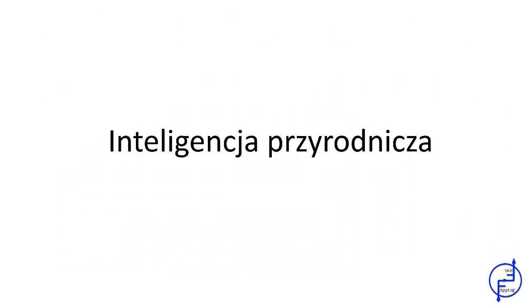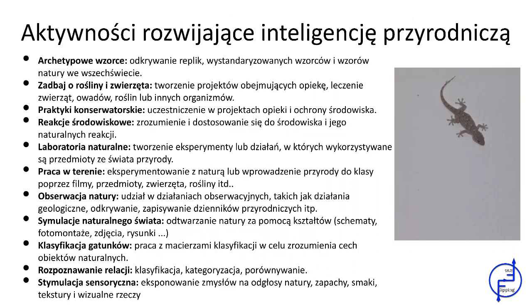Zastosowanie inteligencji przyrodniczej w klasie. Inteligencja przyrodnicza była jedną z ostatnich, które Gardner włączył do swojej teorii, ale nie czyni jej nieważną. Aby wspomóc rozwój tej inteligencji, możemy korzystać z ćwiczeń polegających na klasyfikowaniu obiektów, kategoryzowaniu, porównywaniu wszystkiego co dotyczy środowiska, wyjaśnianiu zjawisk naturalnych, obserwacji przyrody, prowadzeniu zajęć na świeżym powietrzu oraz rozpoznawaniu zależności.